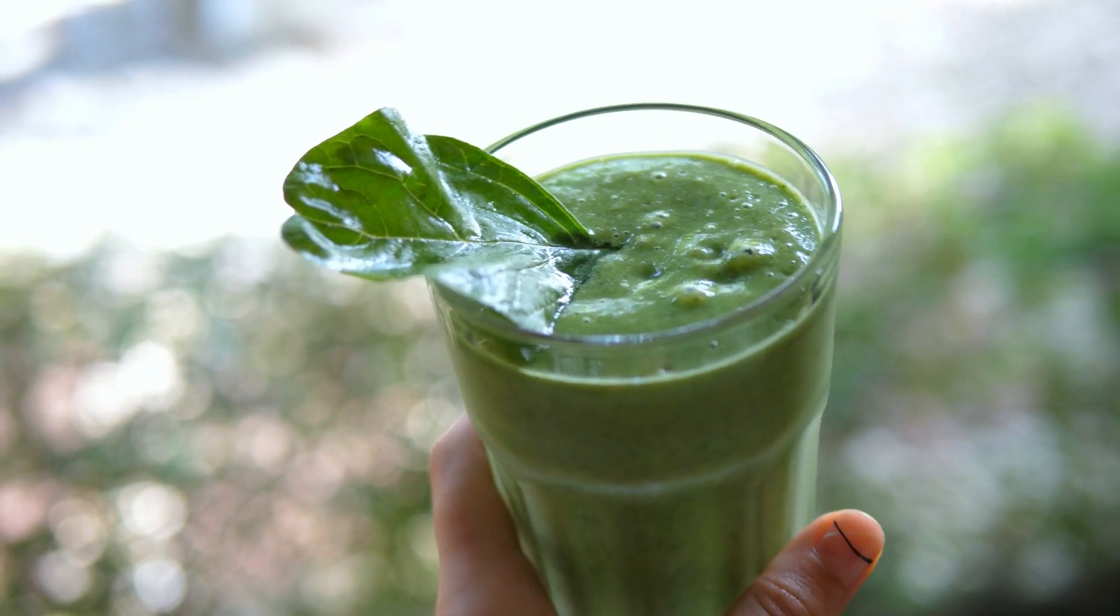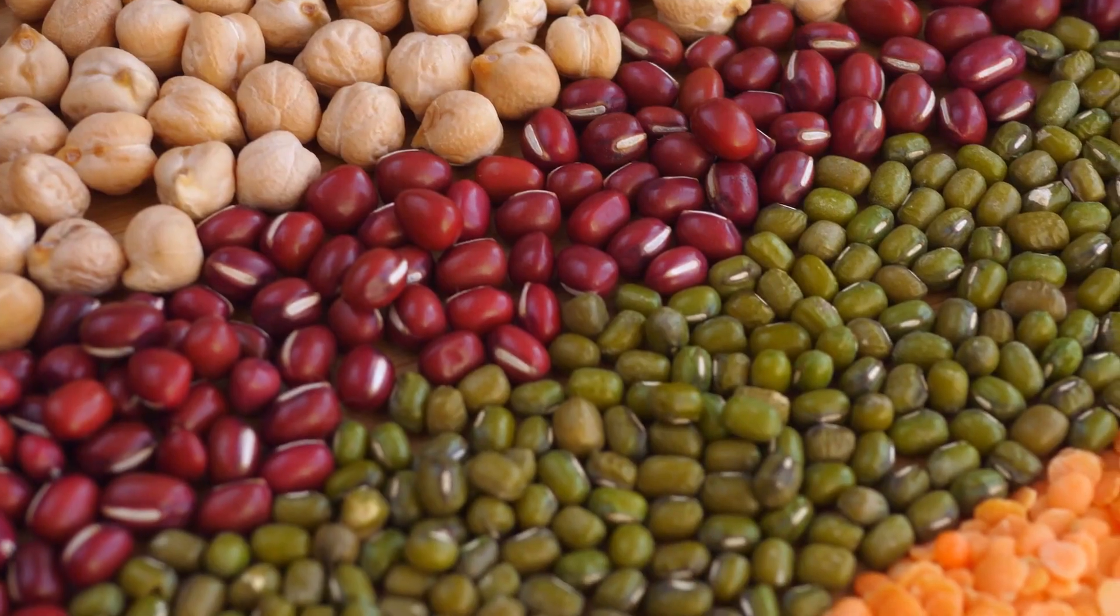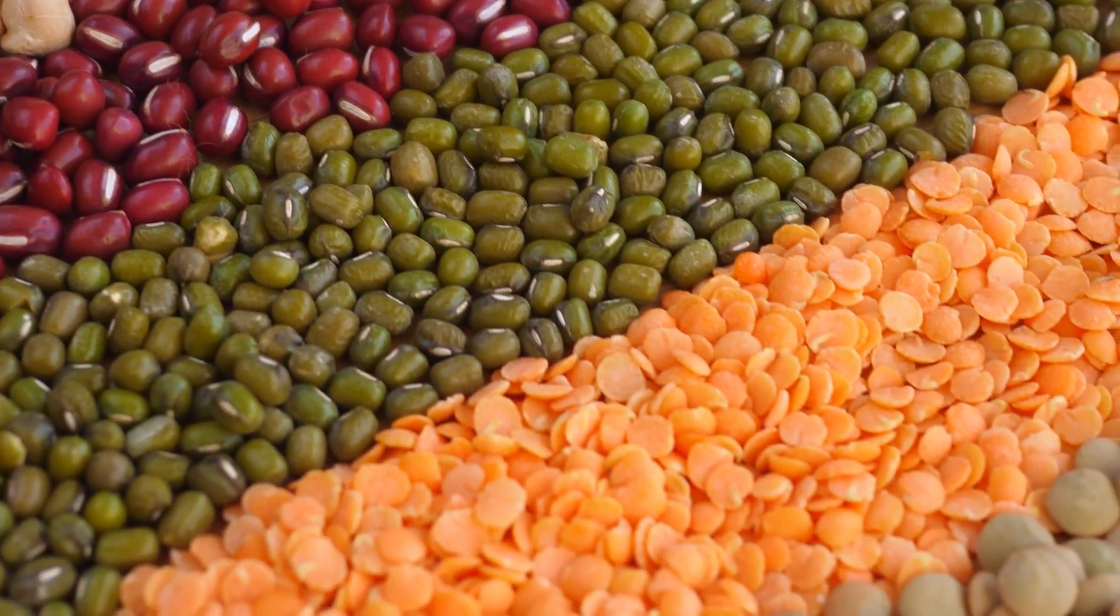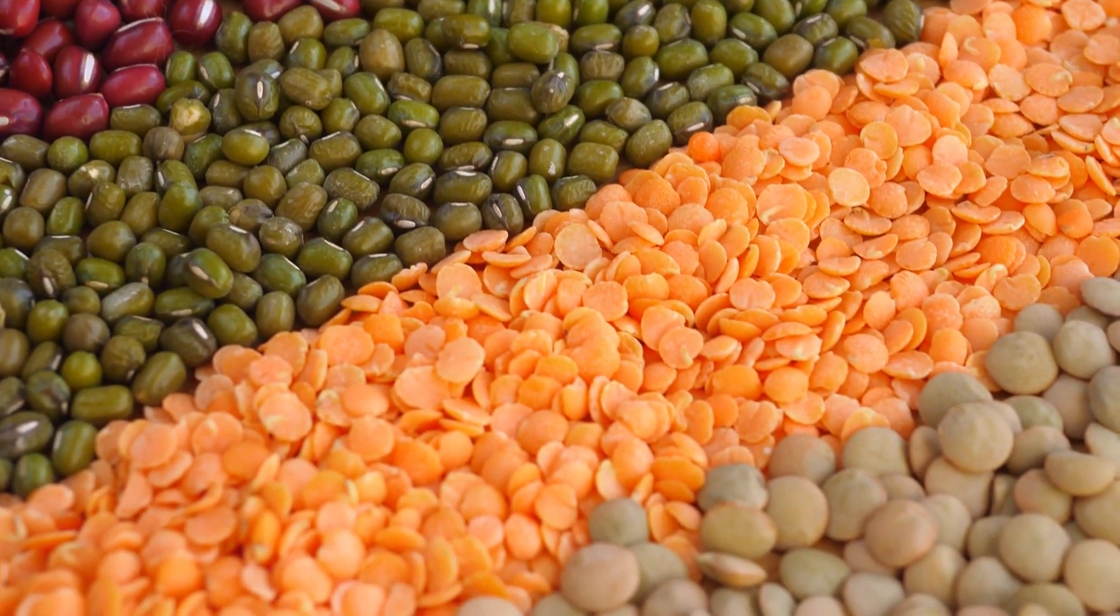Foods high in magnesium include leafy greens like spinach and kale, nuts and seeds like almonds and pumpkin seeds, whole grains like brown rice and quinoa, and legumes like black beans.